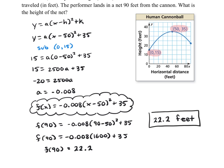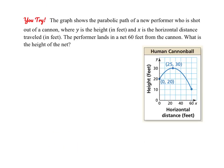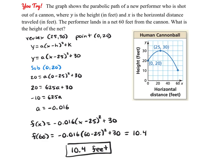Being able to model a quadratic scenario allows us to make predictions about future events or find values we can't clearly see on our graph. Please pause the video and give the next one a try on your own. Since we were given the vertex and an additional point, we use vertex form again. Here is the model I used to answer the question: what is the y value when x equals 60?